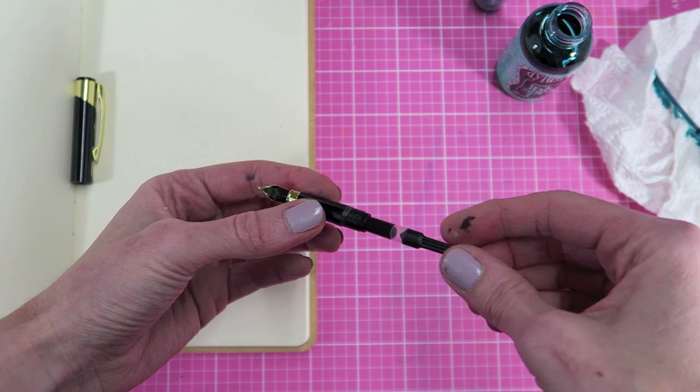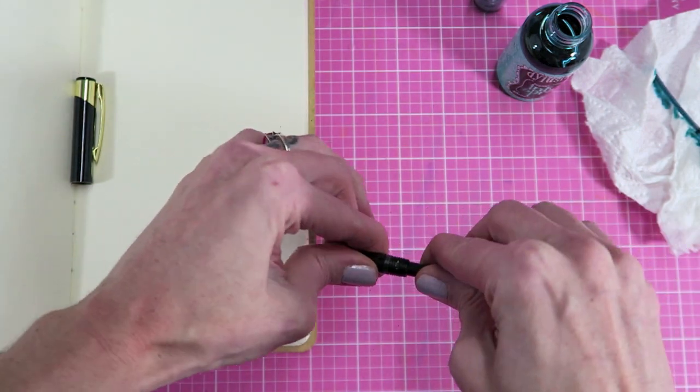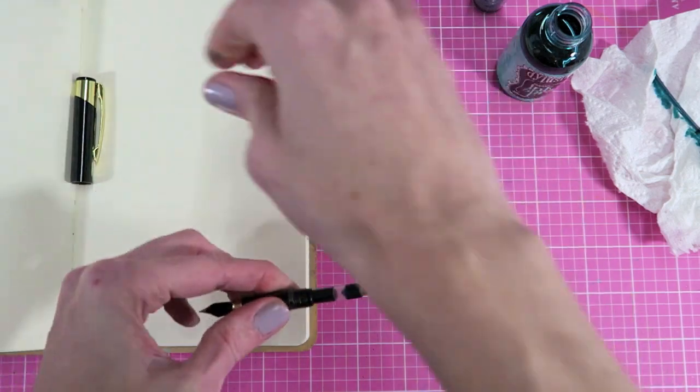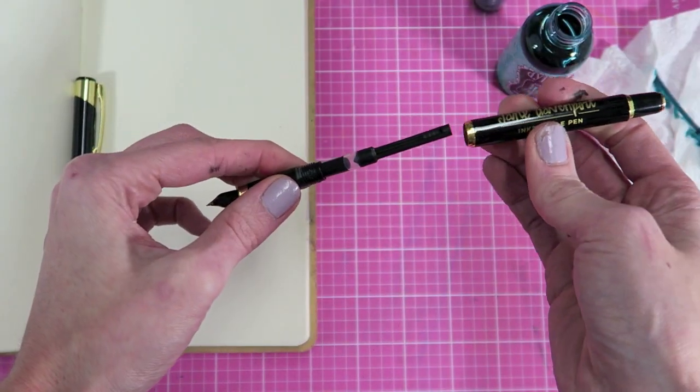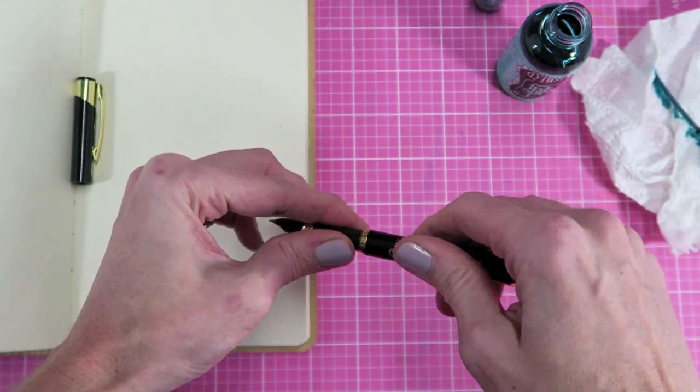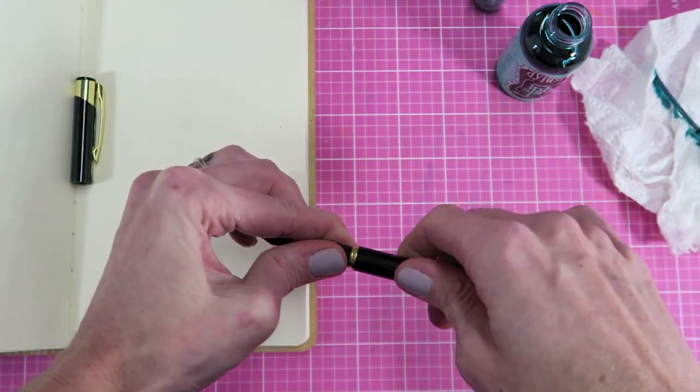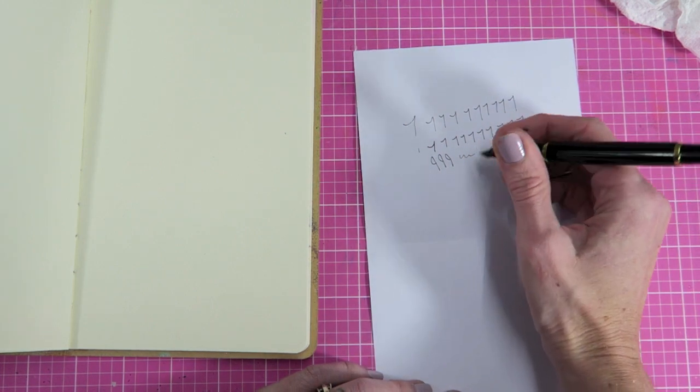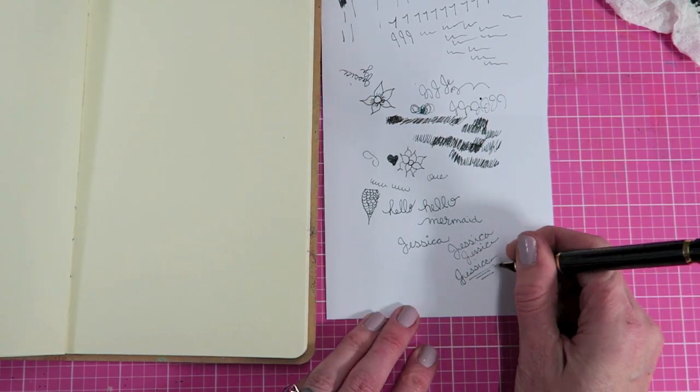So go ahead and put it in just like you did the other ink cartridge, you can screw the top part on, you just want to make sure you hear that click as well and then for this it did take a little bit of scribbling to get the ink to flow into this nice dark turquoise because it was still showing up the black ink.